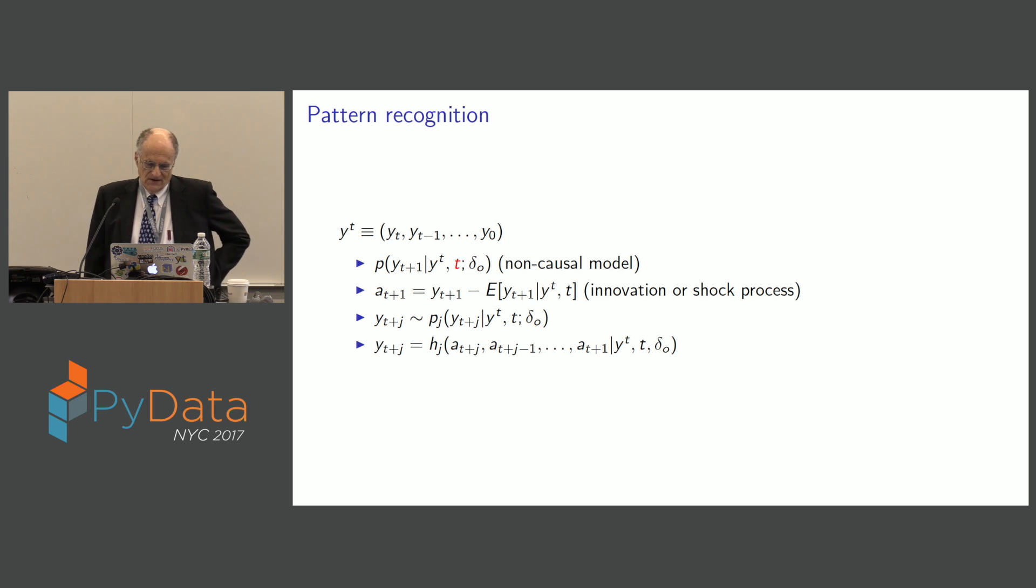It's basically a non-linear function. And then A is going to be the model is going to yield me an innovation or shock process. It's going to have a notion of news or information. That's what A is. Notice, that's just the difference between Y and what I could predict based on past data. That's information. And then economists form impulse response functions. They ask, if I feed a sequence of shocks in, how are the dynamics of the Ys going to look like? Engineers do that too. That's pattern recognition.